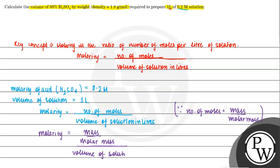So basically by these steps, we will calculate the mass of H2SO4, which is 80% in liters. Now on to the next slide.